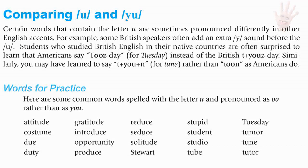OO versus U. Some words with the letter U are sometimes pronounced differently in other English accents. Some British speakers often add an extra Y sound before the U. Non-native speakers who studied British English are often surprised to learn that Americans say 'Tuesday' instead of the British 'Tyuesday.' Similarly, you may have learned to say 'tyune' rather than 'tune.' Here are common words spelled with U and pronounced as OO rather than YOO: attitude, costume, do, duty, gratitude, introduce, opportunity, produce, reduce, seduce, solitude.